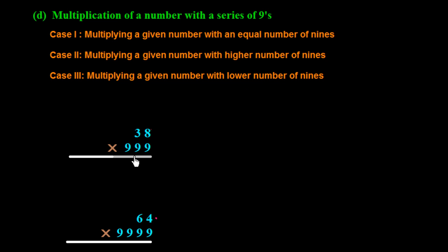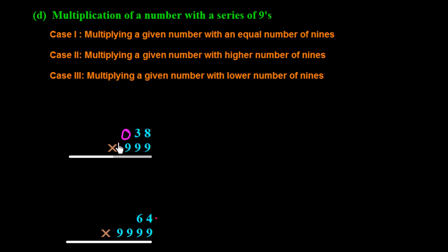In this example, 38 has to be multiplied with 999. The given number is 38 and we multiply it with a series of 9s where the count of 9s is one digit more than the given number. So first of all we put a 0 on the hundreds digit of 38, because we can put as many zeros before a number without changing its value.